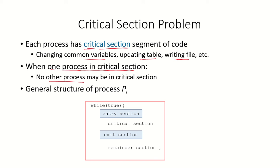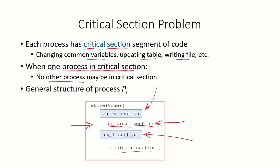The general structure of any process with a critical section should include an entry section, which restricts access so that once one process has entered the critical section no other process can enter. Only when the process finishes its work in the critical section does an exit section execute, which allows other processes to enter the critical section. The exit section can then be followed by the remainder of the code.